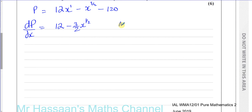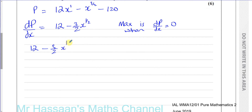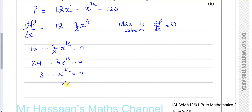We know that the maximum is when dP/dx is equal to 0. So we set 12 minus 3/2 times X to the power of a half equal to 0. Multiplying everything by 2 gives 24 minus 3X to the power of a half equals 0. Dividing by 3 gives 8 minus X to the power of a half equals 0, so X to the power of a half equals 8. Squaring both sides gives X equals 8 squared, which is 64.